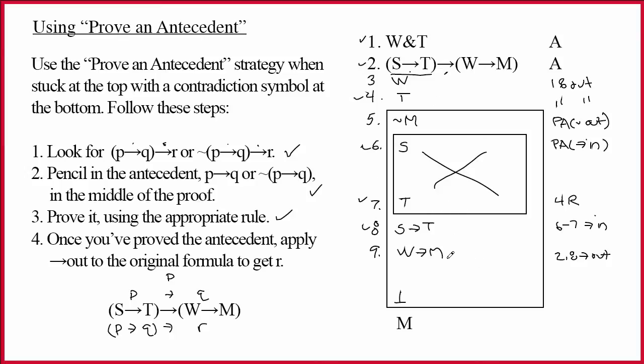In fact, I say, well, W arrow M is the only thing I haven't worked on that's interesting. And I do have a W. So, on ten, I will get M. M goes there. And over here, the justification. Which is three, nine, arrow out. Three comma nine arrow out.